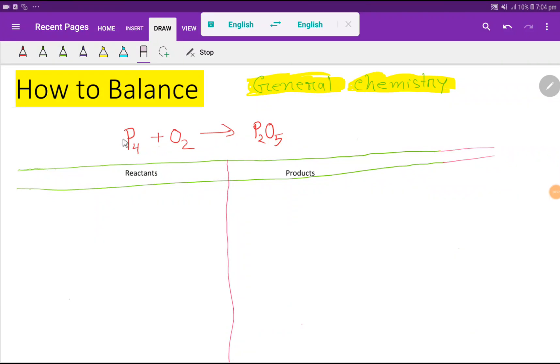Welcome to this class. Today we are going to balance this reaction. This is phosphorus, this is oxygen, and this is phosphorus pentoxide. To balance this reaction, at first I have to draw a table like this.